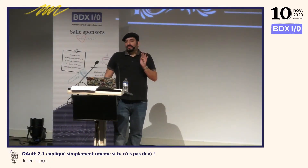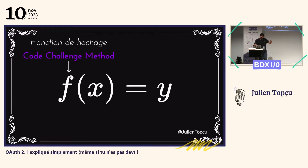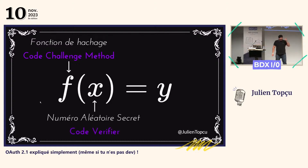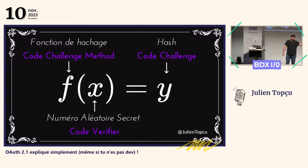Donc, une fonction de hachage, ça a une particularité : c'est f(x) = y, mais il est très difficile mathématiquement de retrouver le x à partir du y. C'est pour cela qu'on fonctionne sur une fonction de hachage. Quelques mots de vocabulaire : f, la fonction de hachage, dans le monde OAuth, ça s'appelle le code challenge method. Le x, qui est le numéro secret, c'est le code verifier. Et le y, c'est le code challenge. Tout ce qui est en haut — le code challenge — vous pouvez le communiquer publiquement, il est quasi impossible de récupérer le x à partir de ça. Donc on peut émettre ça sur le front channel. Par contre, le x, c'est le back channel.